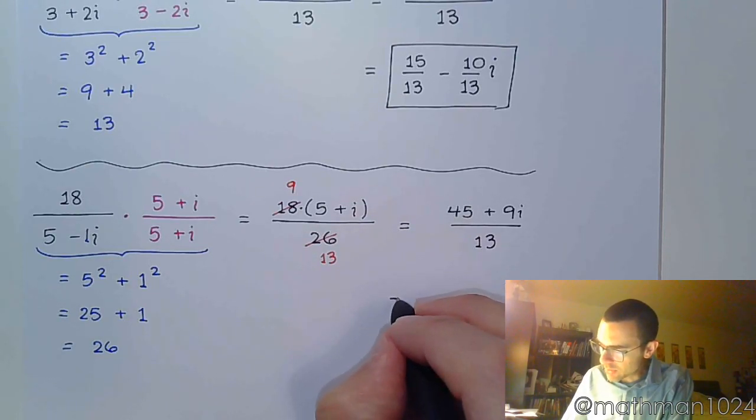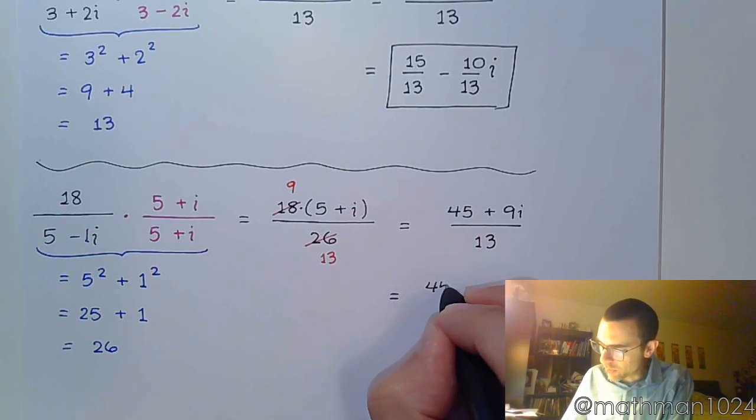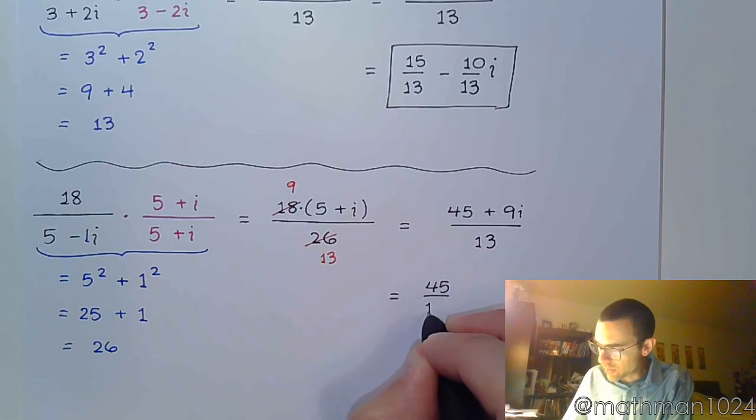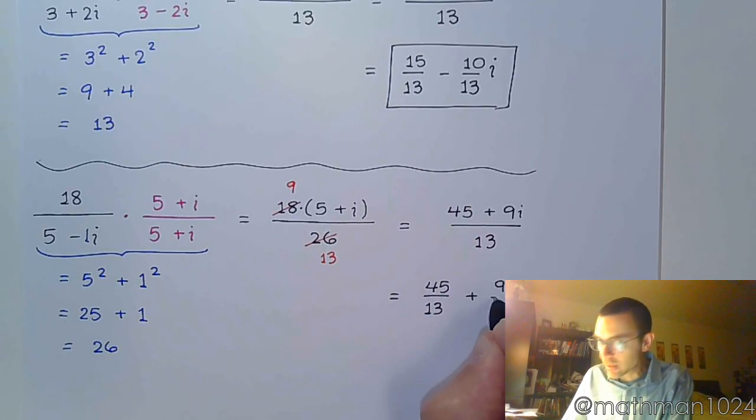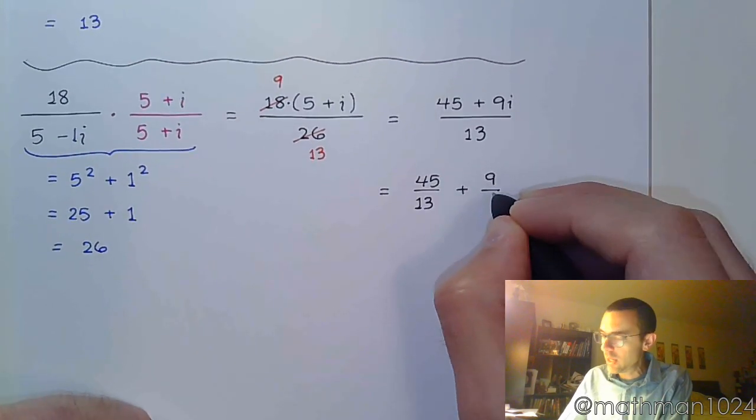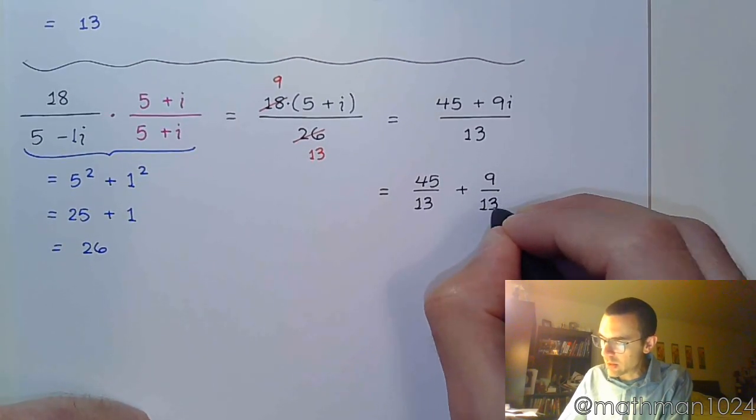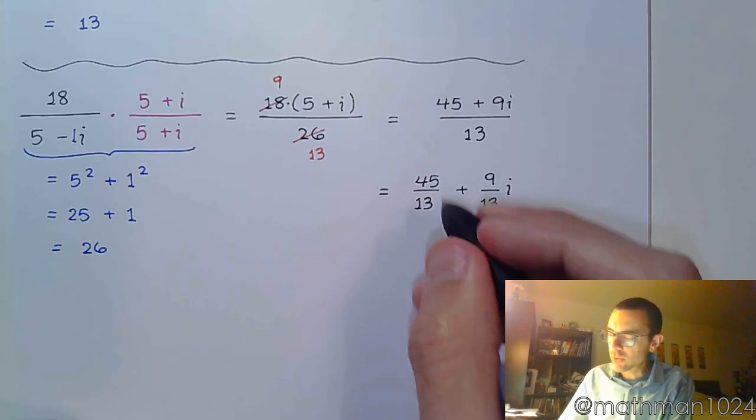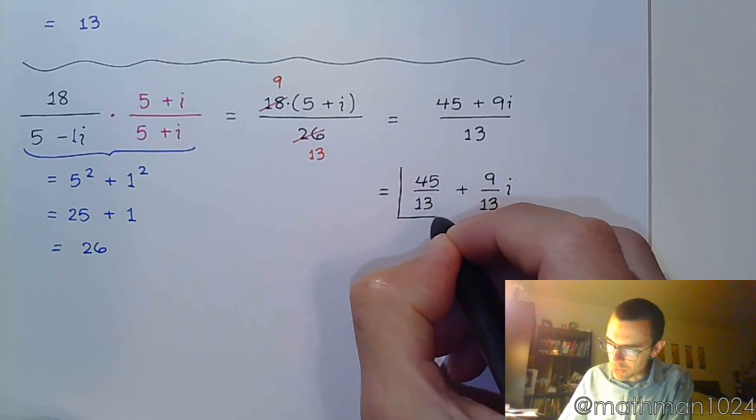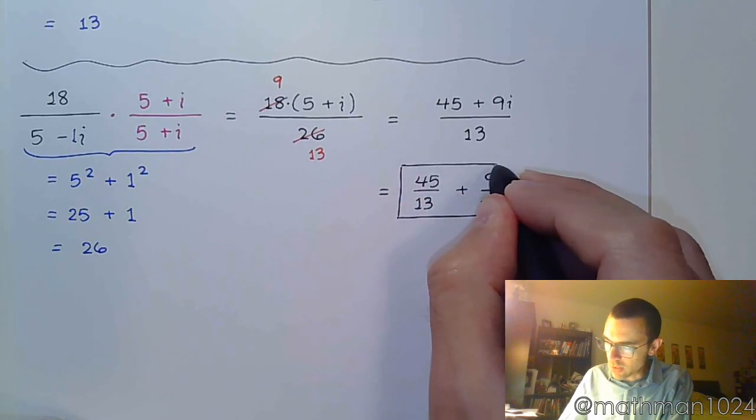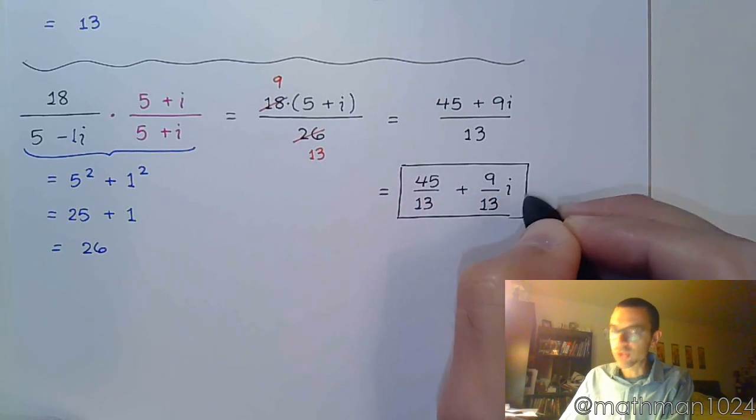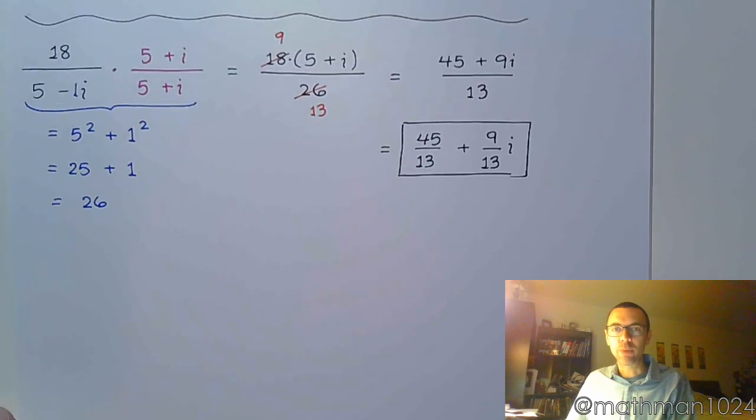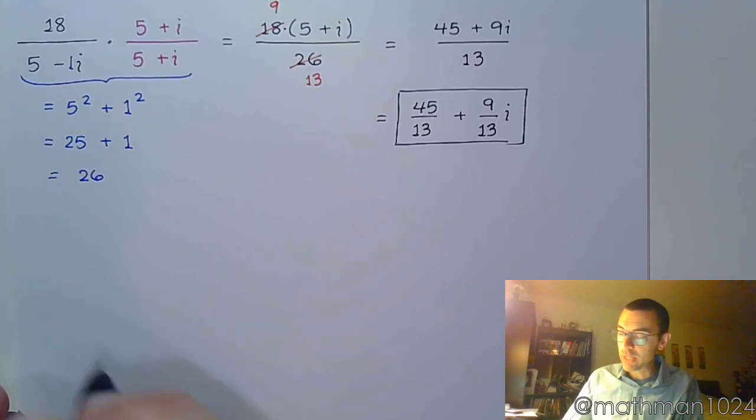So now let's separate this. We have 45 over 13 plus the imaginary part is going to be 9 over 13i. Again, be very careful that you don't put the i in the denominator. We worked so hard to rework this so I didn't have anything imaginary in the denominator. It would be a shame for us to mess it up at the very end.